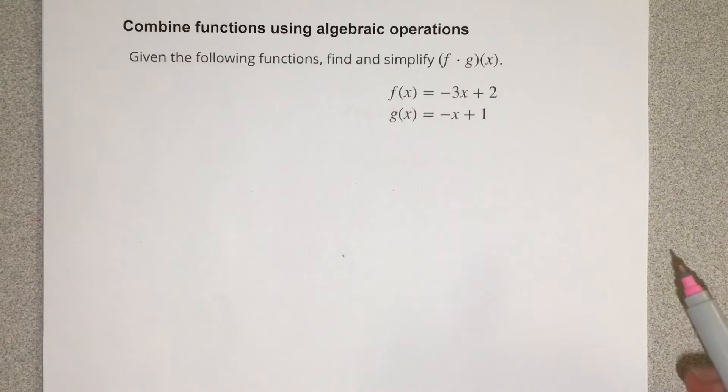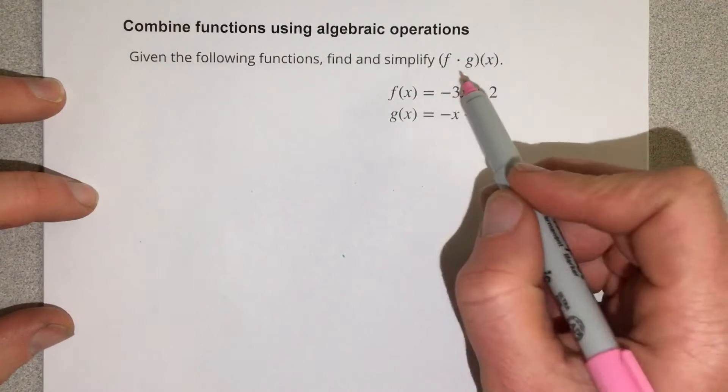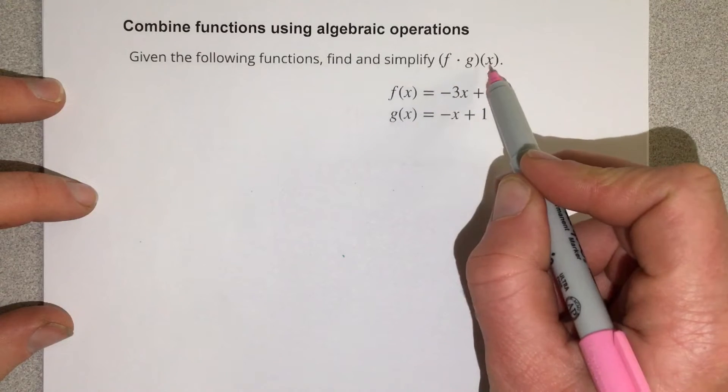In this problem, we're going to combine functions using algebraic operations. The operation we're using this time is f times g of x.